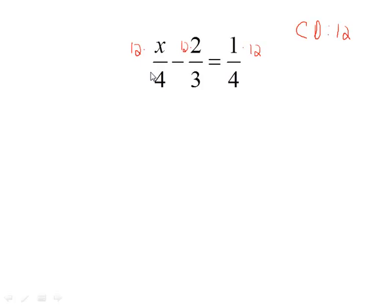12 divided by 4 is 3, so we can reduce this to be 3 and multiply what's left standing. 3 times x is 3x.